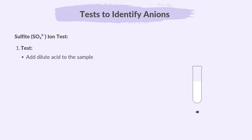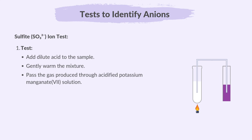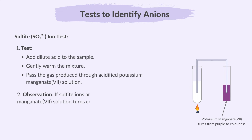Next, for the sulfite ion test, add dilute acid to the sample and gently warm the mixture. Pass the gas produced through acidified potassium manganate solution. If sulfite ions are present, the purple potassium manganate solution turns colourless.